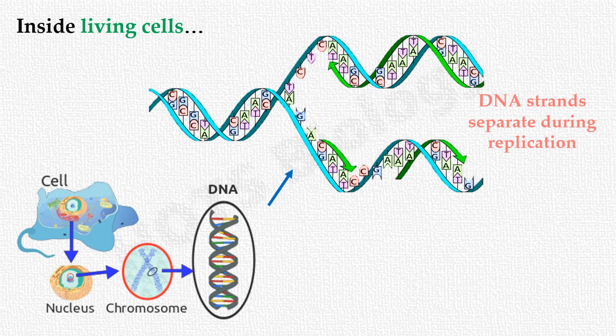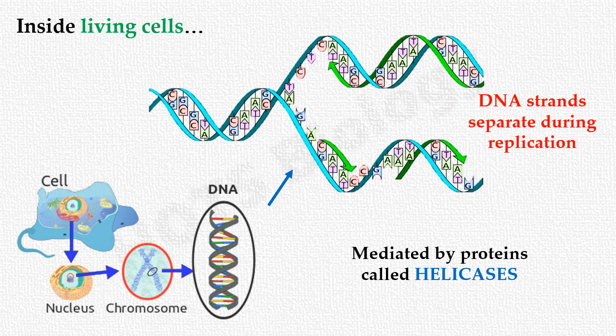Inside living cells, the two strands of DNA separate from each other during DNA replication. This separation disrupts the hydrogen bonds between the bases, and this task is done by proteins called helicases.